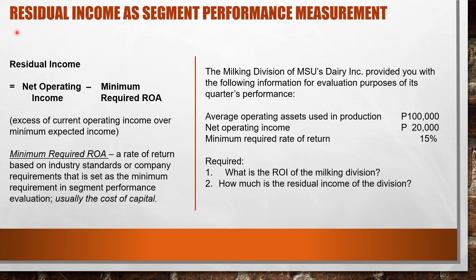Now let's go to the second segment performance measurement technique: residual income. Residual income is the difference between the net operating income and the minimum required return on assets. It is actually the excess of current operating income over the minimum expected income. We now look at what minimum required ROA means.